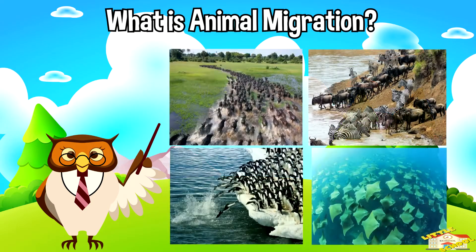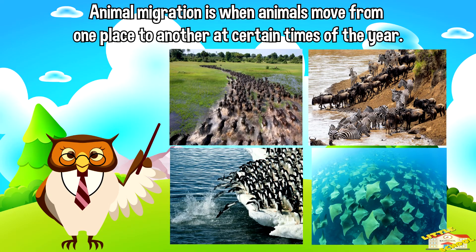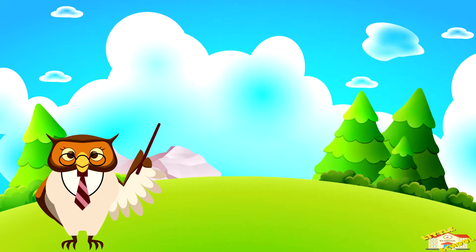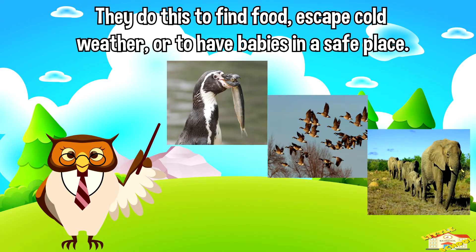What is animal migration? Animal migration is when animals move from one place to another, usually over long distances, at certain times of the year. They do this to find food, escape cold weather, or to have babies in a safe place.